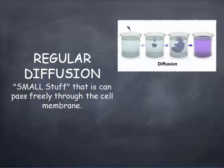Regular diffusion is basically going to be small stuff that can pass freely through the cell membrane without problems. An example of that with the plasmolysis lab would be the iodine being able to sneak through the cell membrane, which was the dialysis tubing, and be able to get in and out freely with no problem. Remember that it's going to be going from an area of high concentration to an area of low concentration. So the area of high concentration in our lab was basically on the outside where all the iodine was, and it wanted to go down the fill, so it went into the membrane — inside of the dialysis tubing.